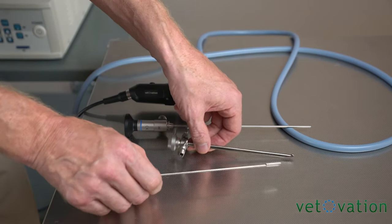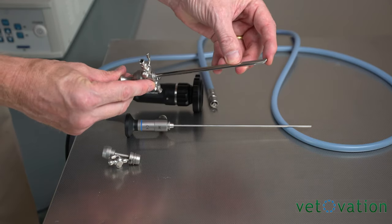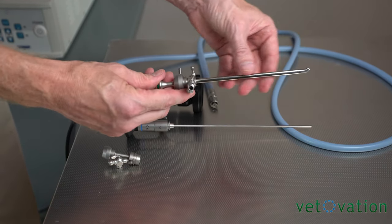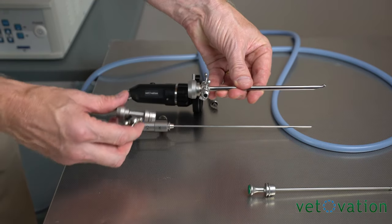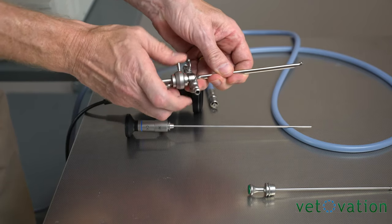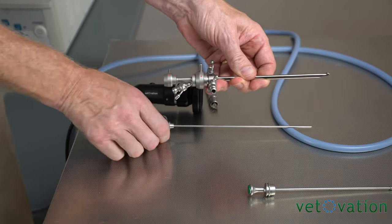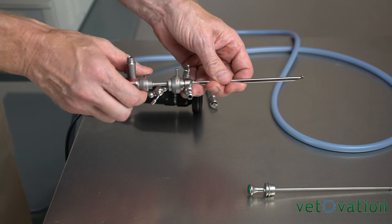If doing female cystoscopy, you'll want to use the obturator which locks into place so that the tip is smooth as it's introduced into the patient. Then take the obturator out, utilize the bridge. Locking it in place enables you to then introduce the scope into the patient down the shaft.